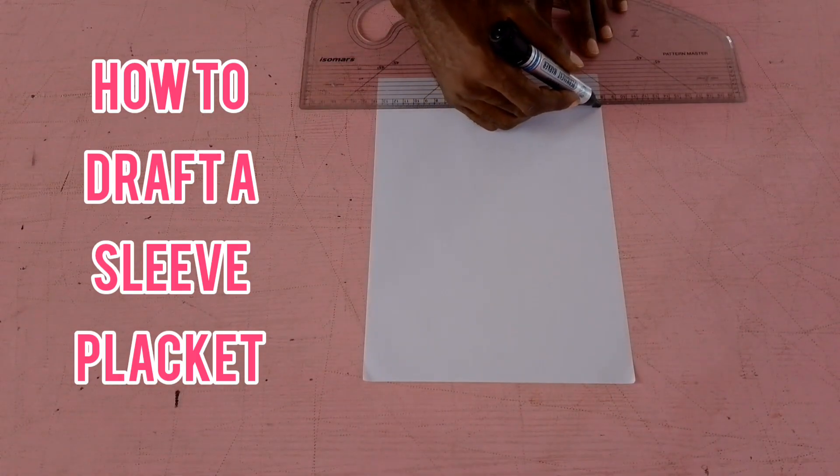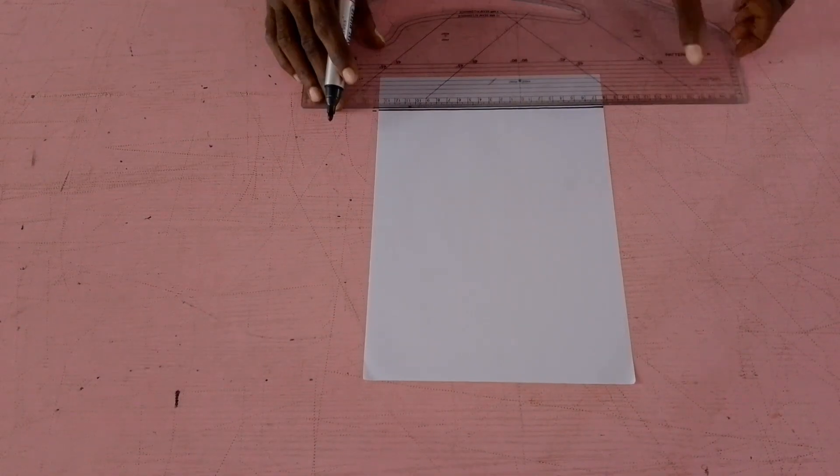Hi guys, today we're going to learn how to draft a sleeve placket. There are two main parts of a sleeve placket, namely the placket and the binding.